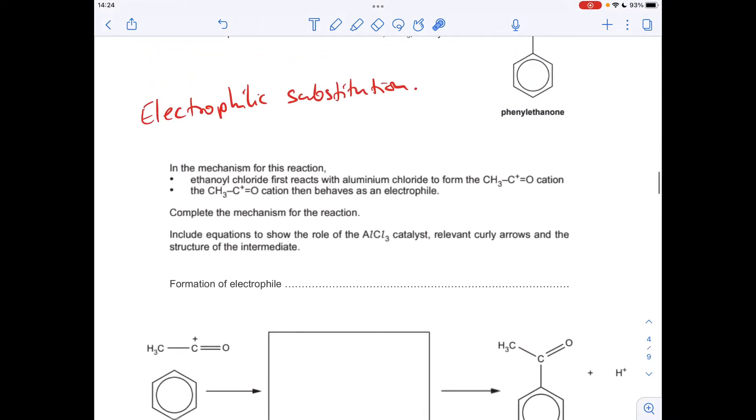Okay, so if we think about this first bullet point, ethanol chloride first reacts with aluminium chloride to form this cation, which is going to behave as an electrophile. So I'll just write up the equation for that.